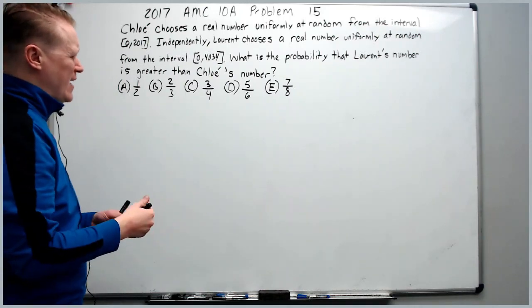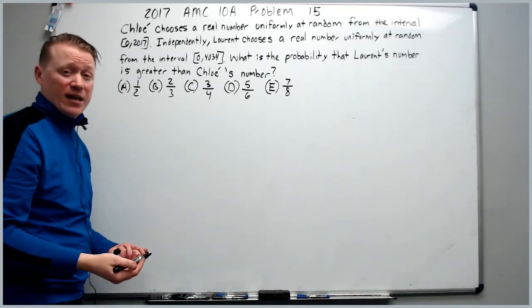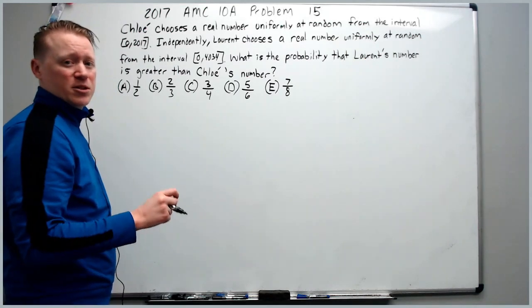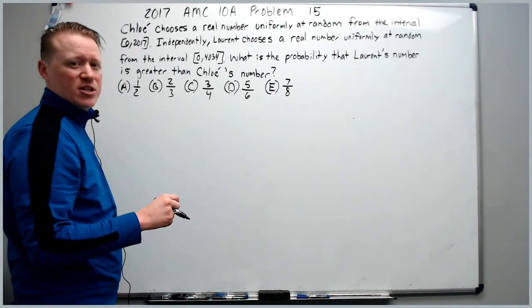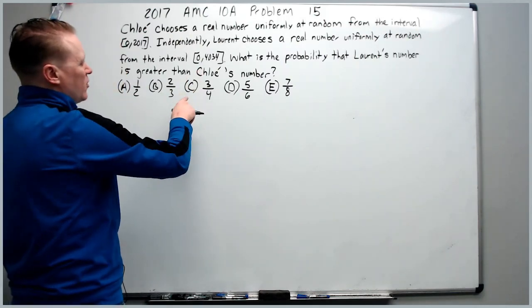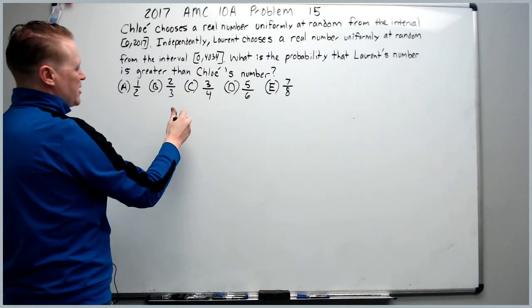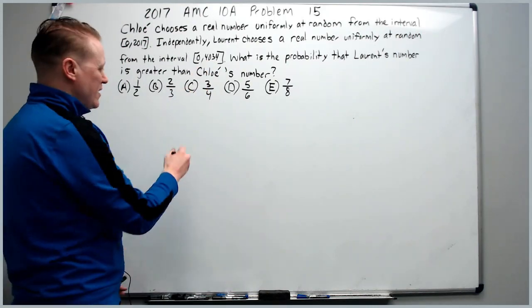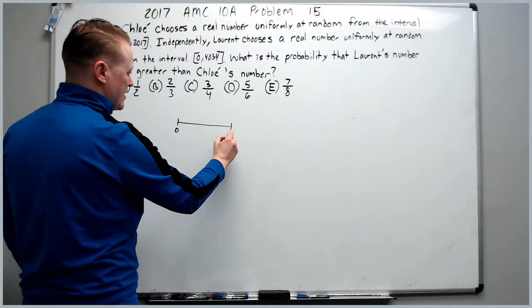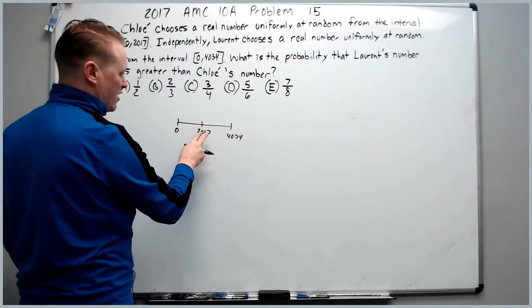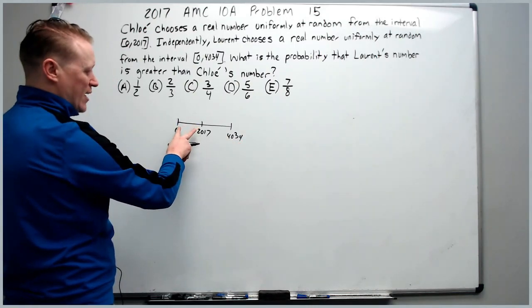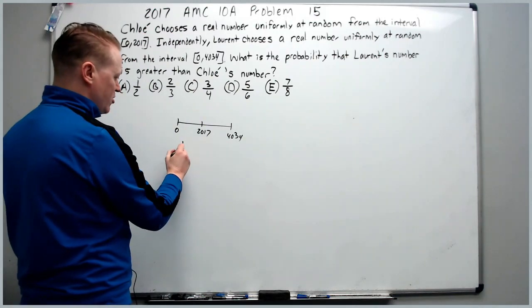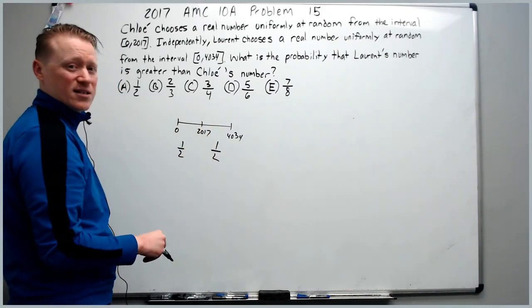What is the probability that Laurent's number is greater than Chloe's number? We can think of it as a geometric probability on a number line. If you want to learn more about geometric probability, I recommend the AOPS intro to probability book. Laurent can either choose a number between 0 and 2017 or 2017 to 4034. Since on a number line those distances are equal because 2017 is half of 4034, then the chance of Laurent choosing a number in this interval and this interval is equal.